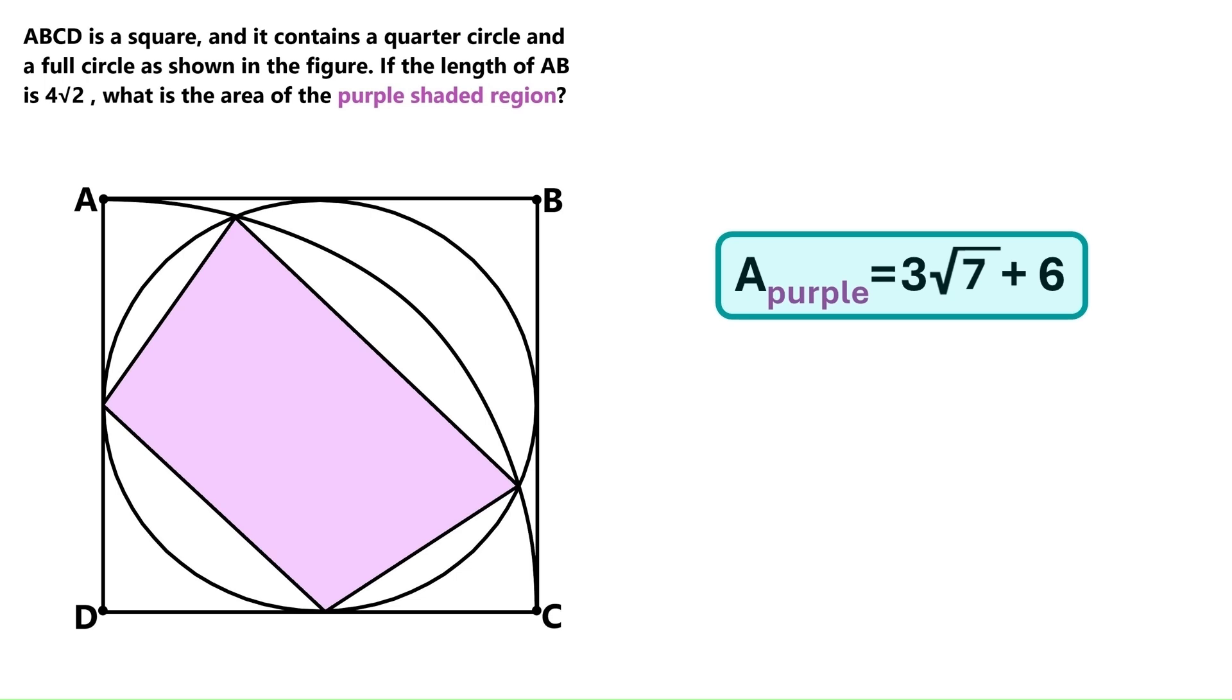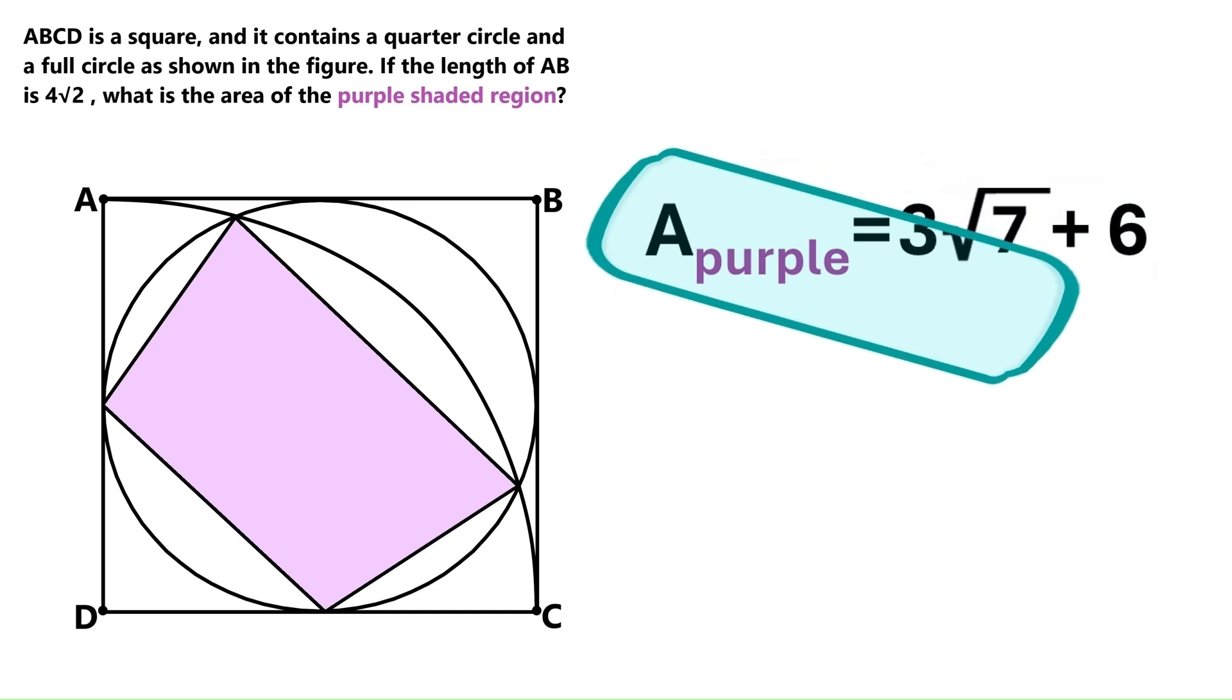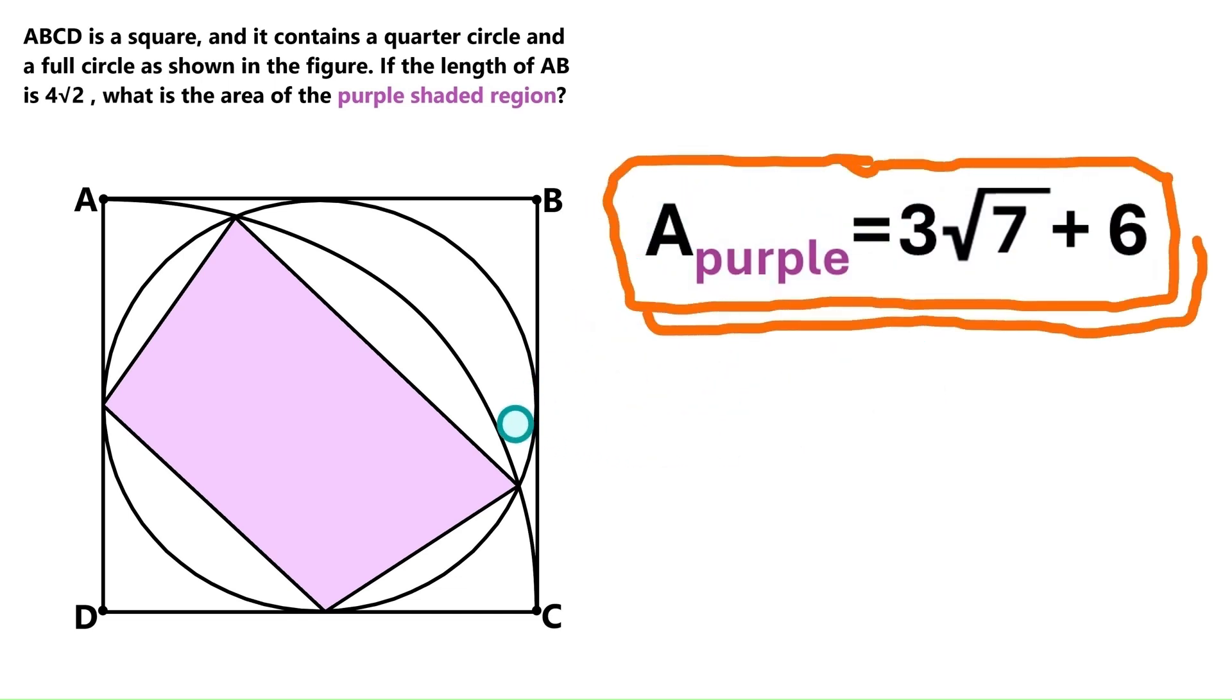And the purple trapezoid area is 3 times radical 7 plus 6. And that was way too easy. Thank you son. So there we are people. We found the purple region's area. And it's 3 times radical 7 plus 6.